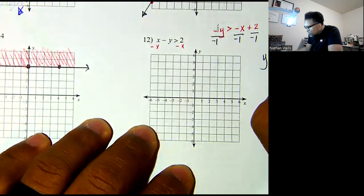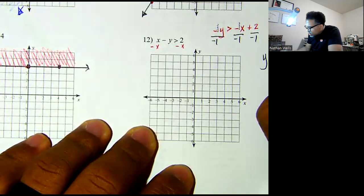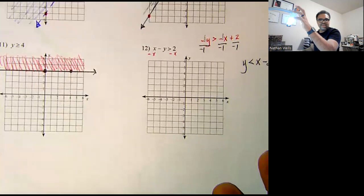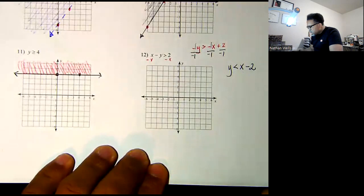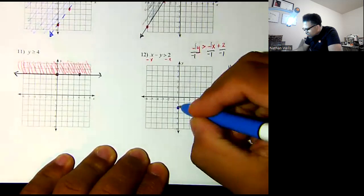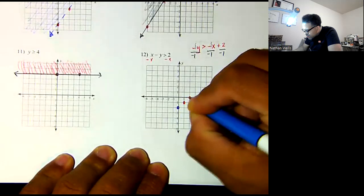A negative 1 divided by negative 1 is a positive 1, so I get y. I divide by a negative number, so my sign is going to shift. Negative 1 divided by negative 1 leaves me with a positive 1x. A positive 2 divided by a negative 1 is a negative 2. So now I can graph this, since I have y is less than x minus 2. Find minus 2 on the graph, that's my y-intercept, and then my slope is 1 over 1. So rise 1, run 1. Rise 1, run 1.